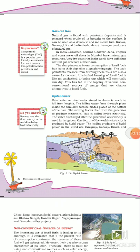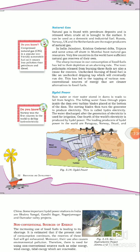Unchecked burning means when we are not controlling the burning of fossil fuels, we will face problems — just like a dripping tap that is not turned off will eventually run dry. This has led to the tapping of various non-conventional sources of energy that are cleaner alternatives to fossil fuels.